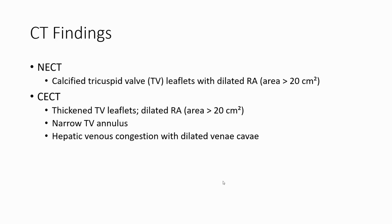On CT findings, non-contrast enhanced CT can show a calcified tricuspid valve and a dilated right atrium with an area greater than 20 cm². Contrast-enhanced CT can demonstrate thickened tricuspid leaflets, a dilated right atrium, a narrowed tricuspid valve annulus, and hepatic venous congestion with dilated right atrium.